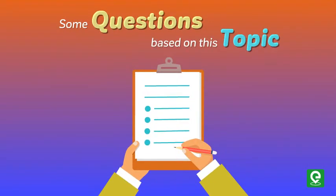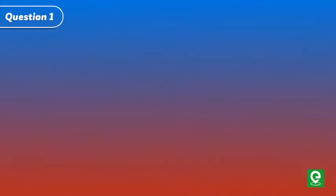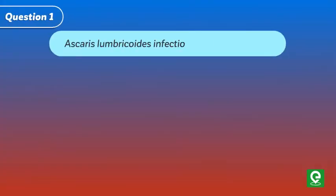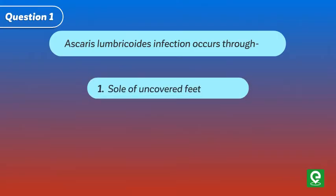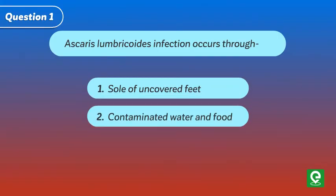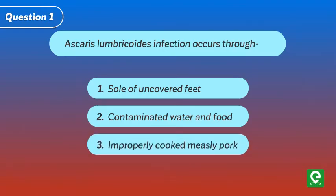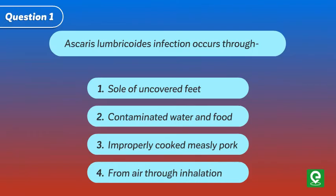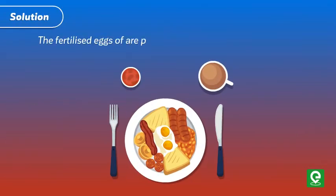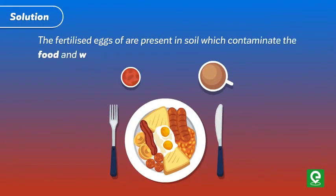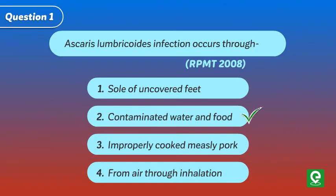Let's solve some questions based on this topic. Question 1: Ascaris lumbricoides infection occurs through — (1) Soil of uncovered feet, (2) Contaminated water and food, (3) Improperly cooked measly pork, (4) From air through inhalation. This question was asked in Rajasthan PMT 2008. The fertilized eggs are present in soil which contaminate food and water. Hence, option 2 is correct.